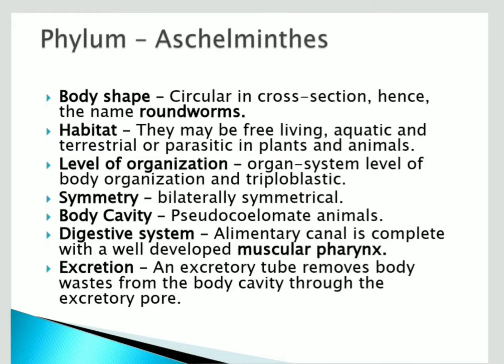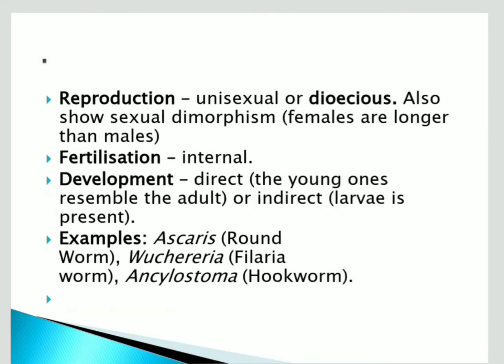The digestive system is complete with a muscular pharynx, meaning two openings are present. Excretion takes place through an excretory pore — a tube that removes body waste.